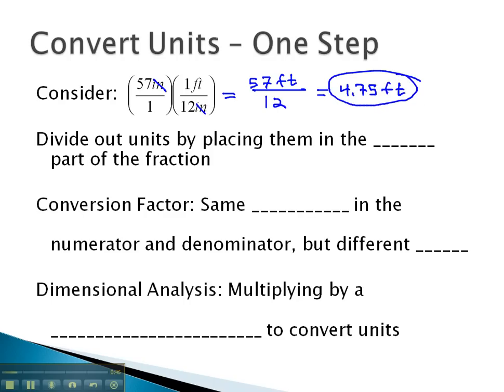And what we've done here is converted 57 inches into feet, 4.75 feet. We did this by dividing out units by placing them in the opposite part of the fraction. If they were on top, we placed the inches on the bottom.